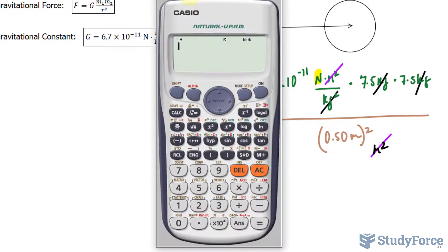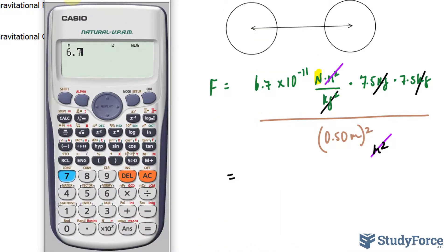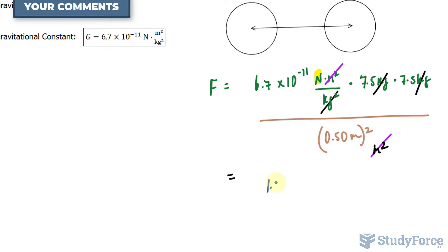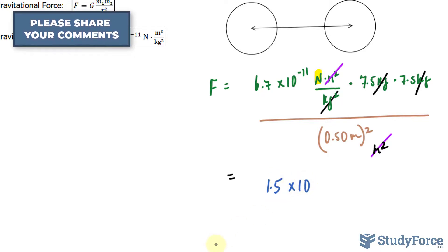So using our calculator, 6.7 times 10 to the power of negative 11 times 7.5 times 7.5, that's the numerator and the denominator is 0.5 to the power of 2. Make sure that your final answer is two significant figures. So we'll write down 1.50 times 10 to the power of negative 8 newtons.